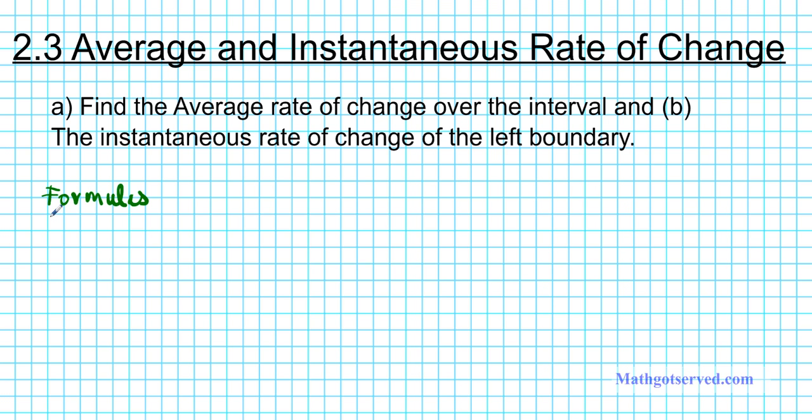The first formula we're going to be looking at is the average rate of change, I'm going to call it AROC. The average rate of change on an interval AB is also known as the slope of the secant line. So average rate of change is delta f over delta x.